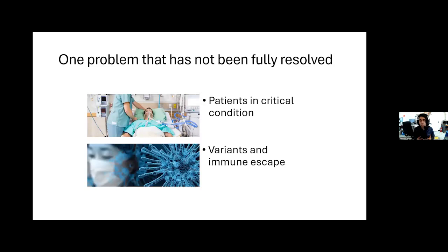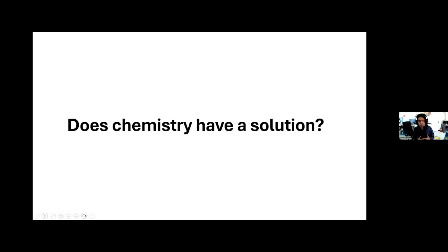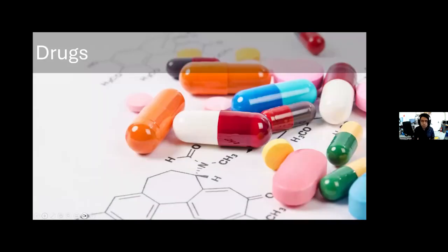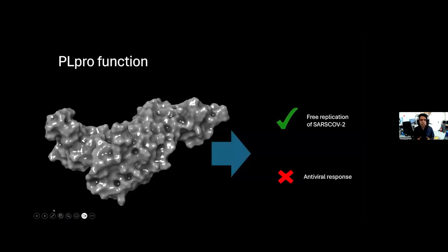New strains and mutations can be more and more resistant against our actual vaccines. The question we need to answer as chemists is: does chemistry have a solution? The answer is yes. Drugs. In this case, drugs against one protein of SARS-CoV-2 called PLpro.